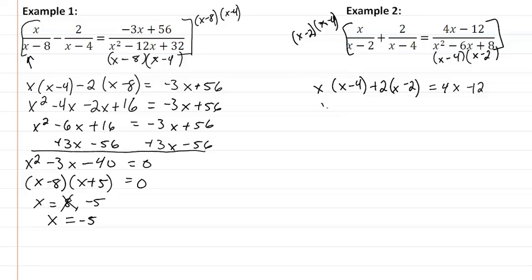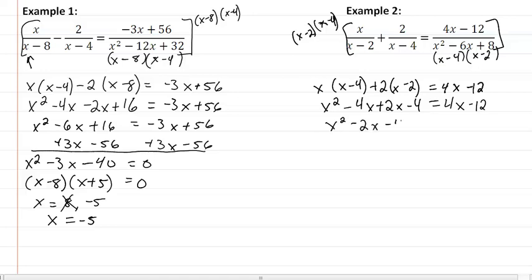So now we have x squared minus 2x minus 2x minus 4 equal to 4x minus 12.